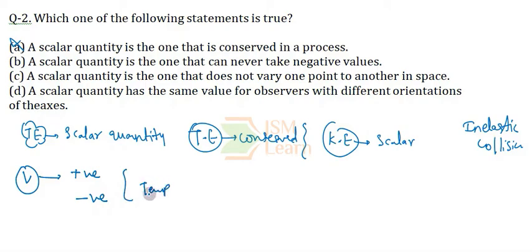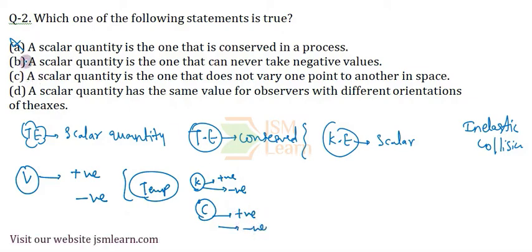temperature is also a scalar quantity. Suppose it is measured in Kelvin, then also it possesses positive values and it can take up positive and negative values, or in degree centigrade also it can take up positive and negative values. So, option B is also wrong.